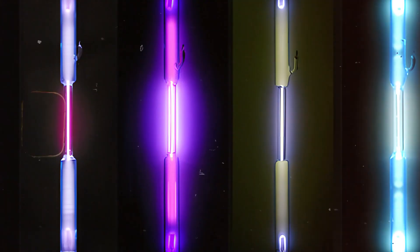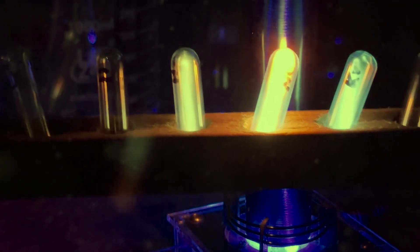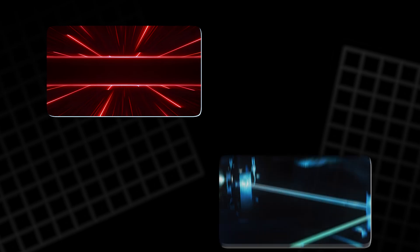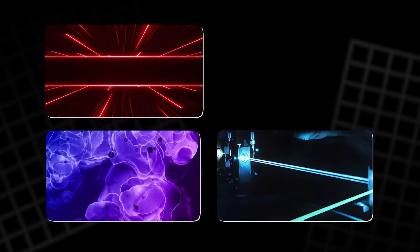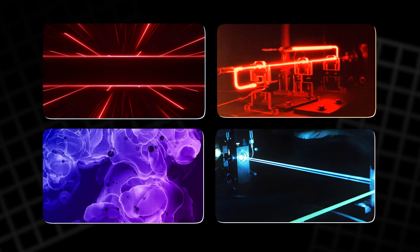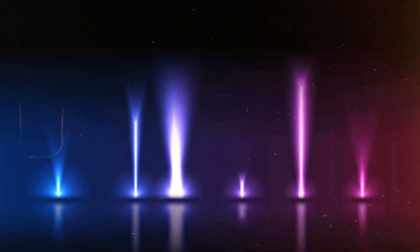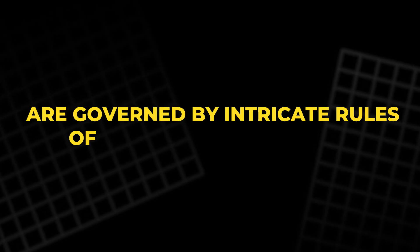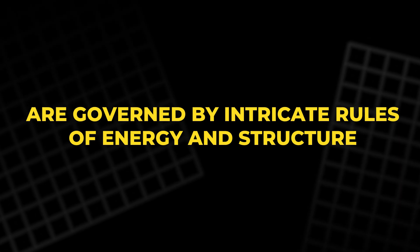In a dark room, a series of glass tubes filled with these gases can turn into a brilliant display of color. Red for neon, blue for argon, lavender for xenon, and soft orange for helium. Beyond their beauty, they remind us that even the simplest looking materials are governed by intricate rules of energy and structure.